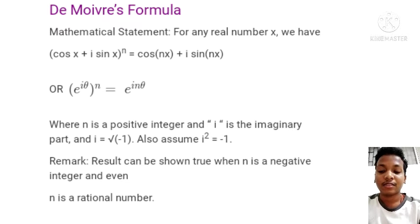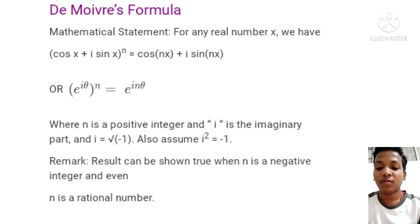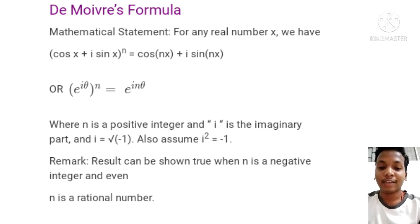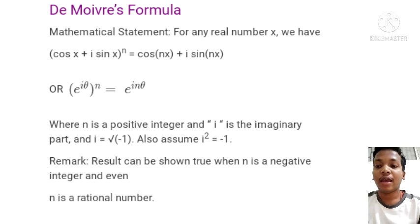For any real number x, De Moivre's formula states: cos x plus i sine x, to the power n, equals cos(nx) plus i sine(nx). Another way of writing the formula is: e to the power i theta, raised to the power n, equals e to the power i n theta, where n is a positive integer and i is the imaginary unit, where i equals the square root of minus 1, so i squared equals minus 1.